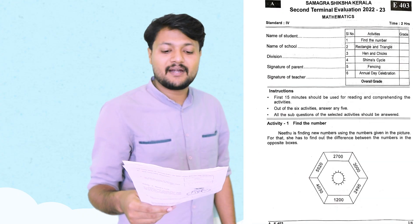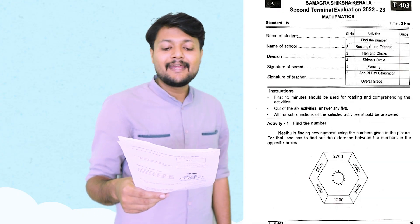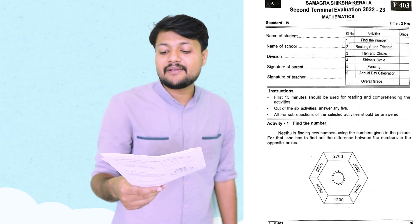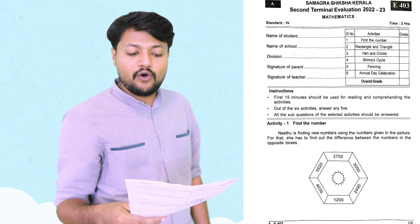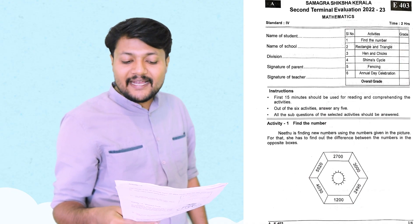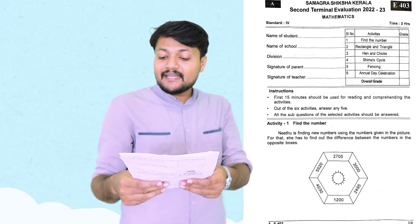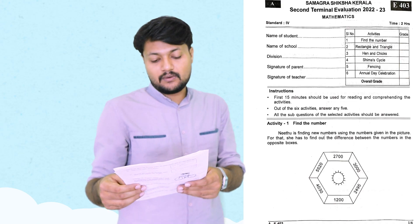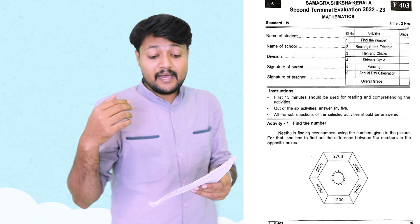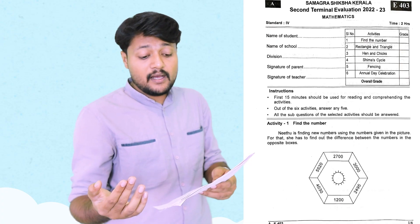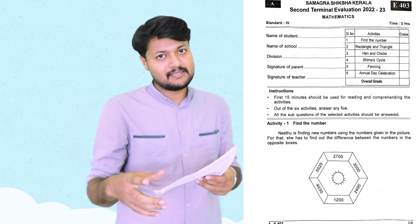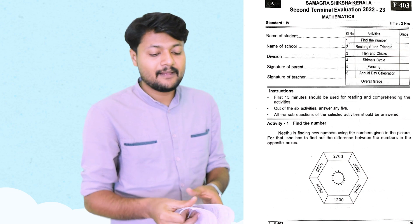Activity 1: Find the number. You are finding new numbers using the numbers given in the picture. She has to find out the difference between the numbers in the opposite boxes. Ready? Then we will see.